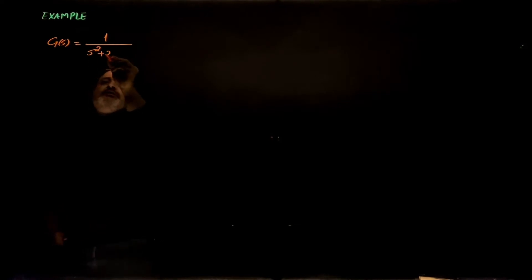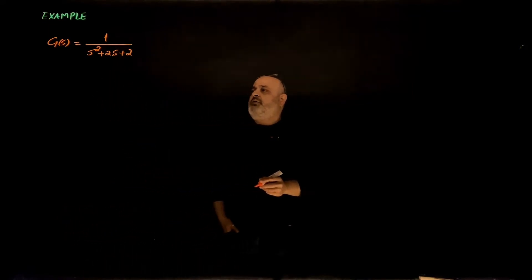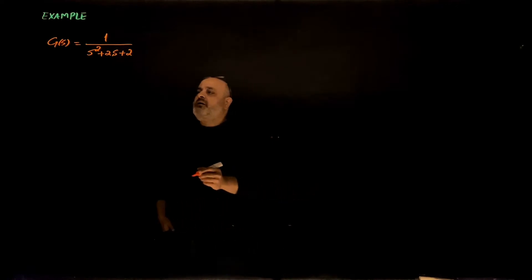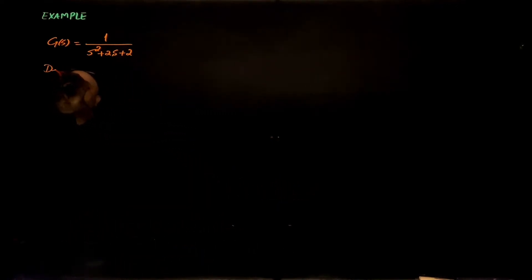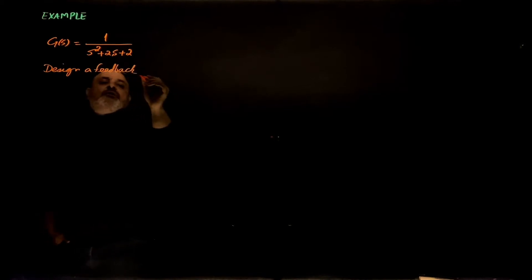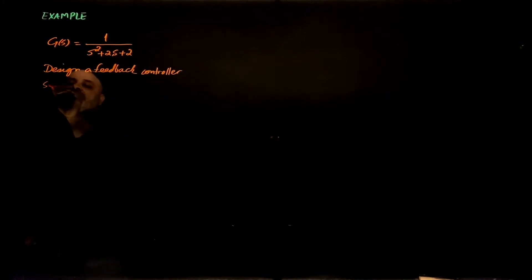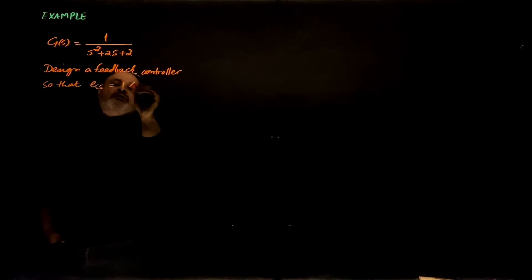Let's look at another example. We have a system with transfer function G(s) = 1/(s²+2s+2). We need to design a feedback controller so that the steady-state error is only 1 percent.